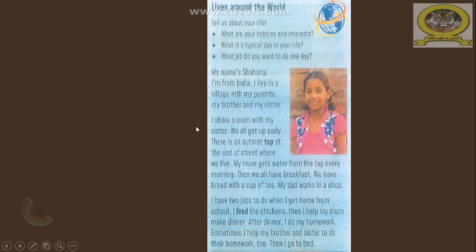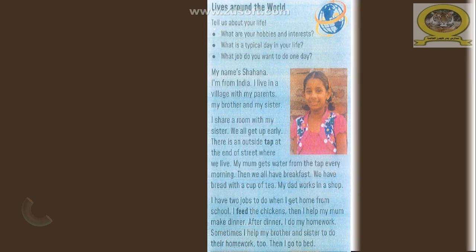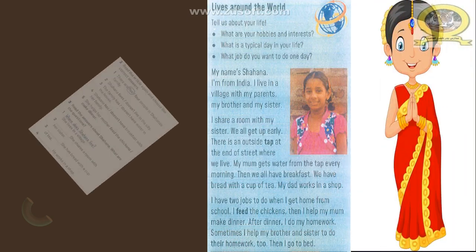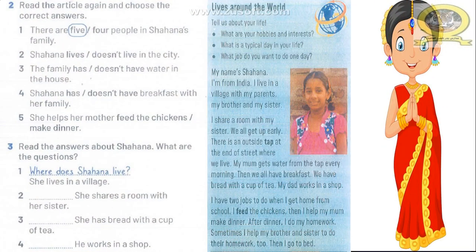We have some exercises about this text. Let's have a look at it. Read the article and choose the correct answer. Number one: there are five or four people in Shahana's family. There are five — Shahana, her parents (her mother and father), her brother and her sister.